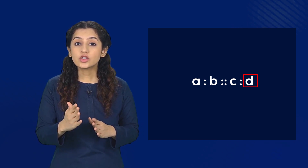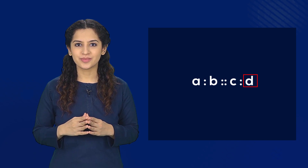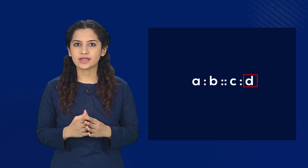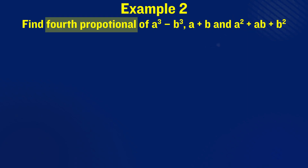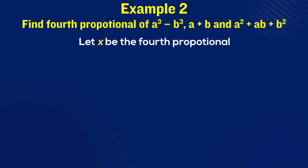If the third proportional exists, shouldn't something called the fourth proportional exist as well? That's exactly what we'll be looking at next. For that, simply consider four quantities a, b, c, and d. We can arrange them in proportion like this — nothing new, except that this fourth quantity d is known as the fourth proportional. Let's see an example to learn how to find it. We are given these three quantities; the fourth proportional is missing. To find it, let's first consider the fourth proportional as x.